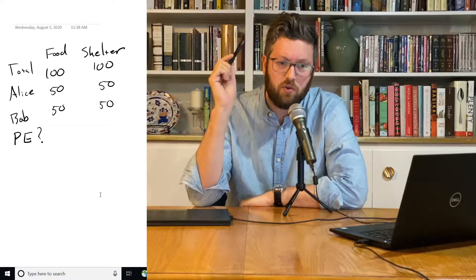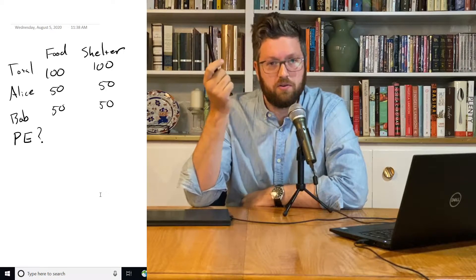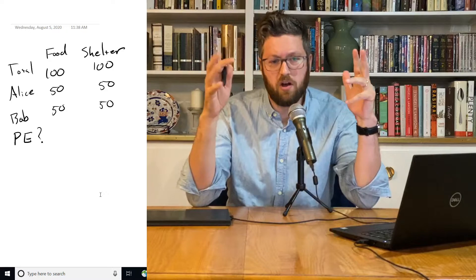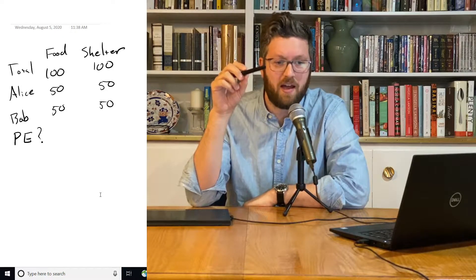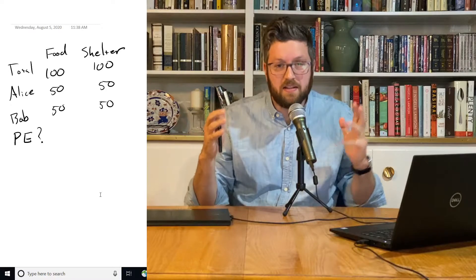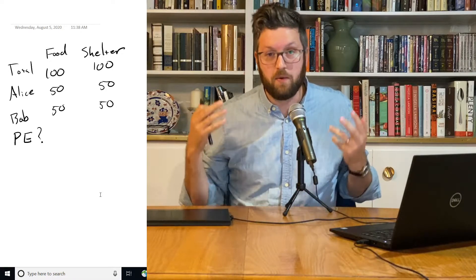Well, since there's only 100 units of food and 100 units of shelter, we're fully using all of it. If we wanted to increase the amount of food to Alice, the only place we could get it is by taking some of it away from Bob. That would make him worse off.